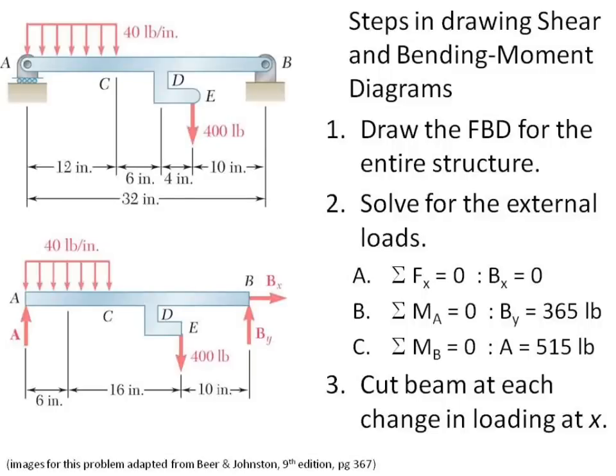I want to talk about the steps you need to draw a shear and bending moment diagram. The first one is to draw a free body diagram of the entire structure. In this problem we have a roller that gives me one force, and I have a pin that gives me two forces. Once I have that, I can write the equations of equilibrium for the entire structure. It's just a rigid body like anything else, and solve for the external loads.